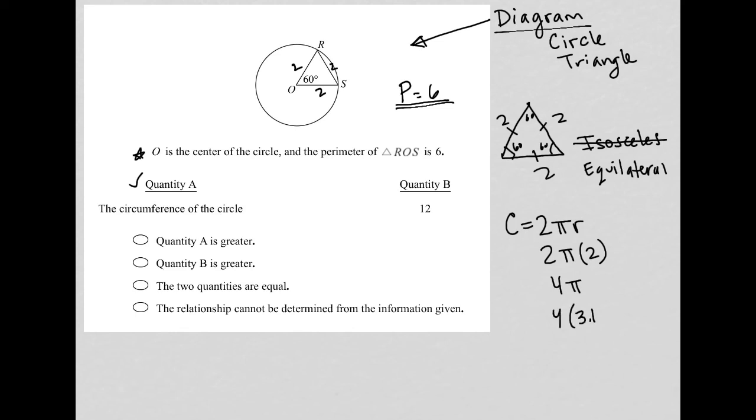Which makes this 4 times 3.14. You have a calculator given on the screen for this test, which I'm not showing here. So we know that this is going to be like 12 point something. I'm going to say 12 point something. Okay, but quantity B is just 12, which means that quantity A must be larger than quantity B.